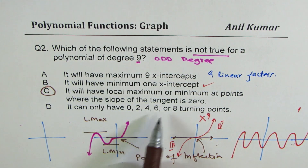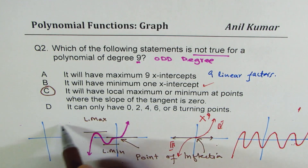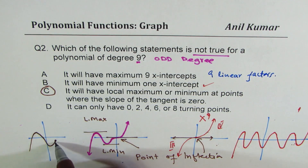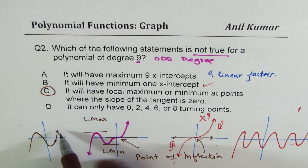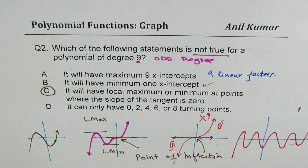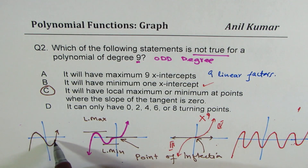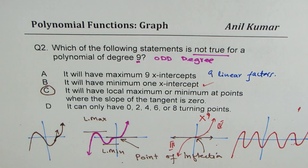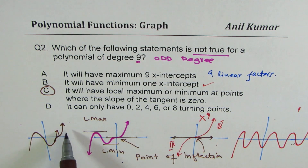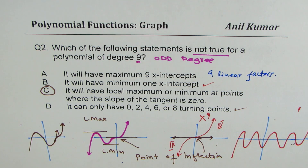D is correct: an odd degree function will have an even number of turning points. If you're starting from one quadrant and ending in another, if you turn once you have to turn a second time. So you only have an even number of turning points. The only incorrect statement is C — that zero slope of a tangent always implies a local max or min, when it could be a point of inflection.